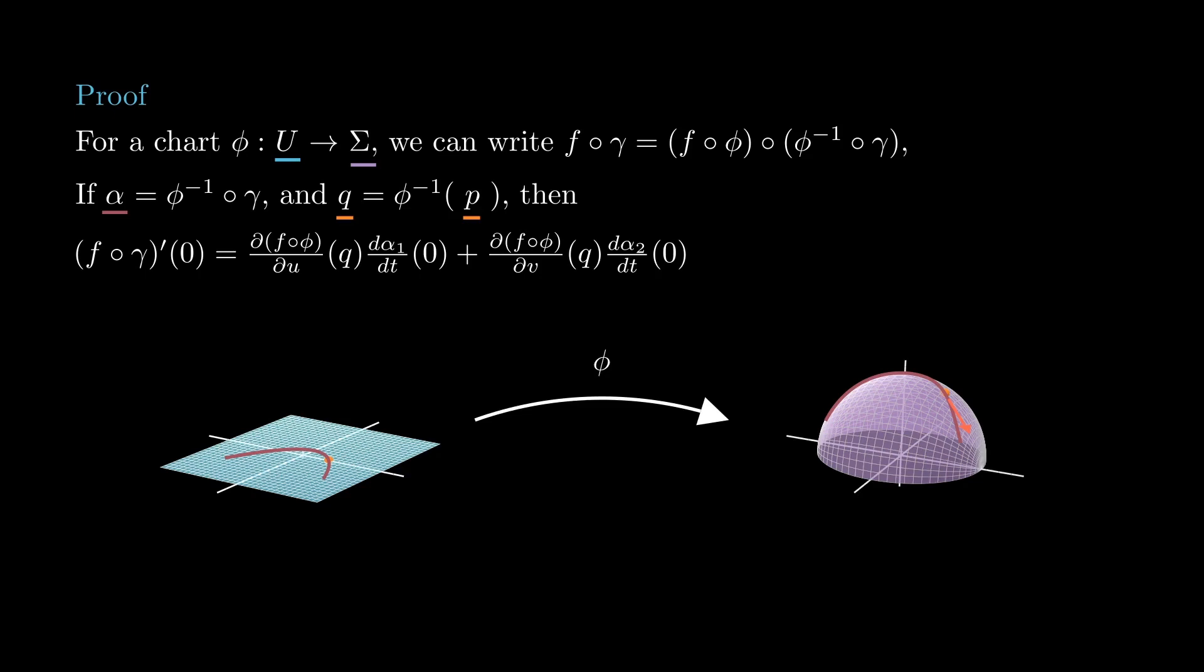This does not only show that the quantity on the left is independent of gamma, but that it depends linearly on the coefficients of w when we express it in the basis of Dp sigma given by the partials of phi, which is exactly what we wanted to show.